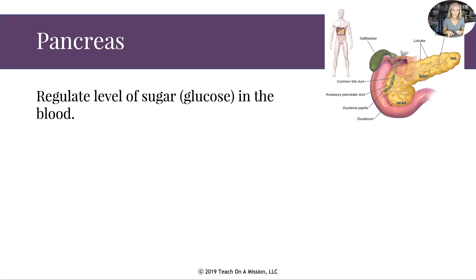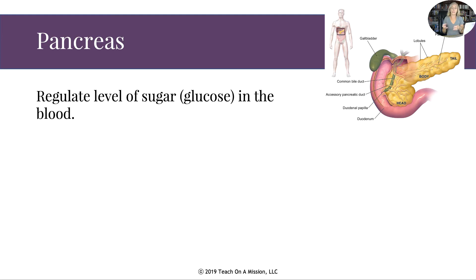Your pancreas actually regulates the level of sugar or glucose in the blood. For diabetic patients — those are the ones who are having issues with their insulin levels — insulin is the hormone released by your pancreas that allows you to regulate the sugar in your blood.